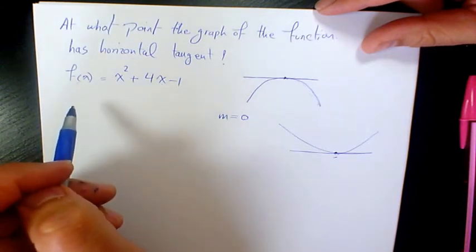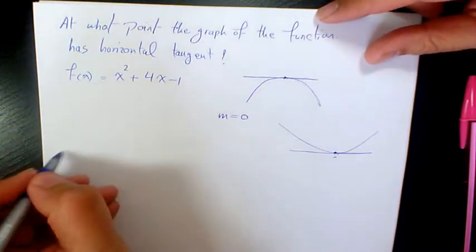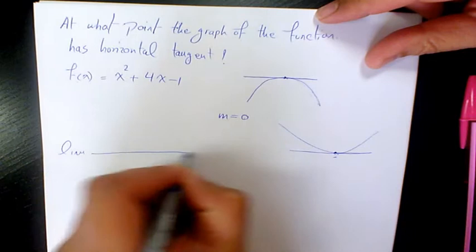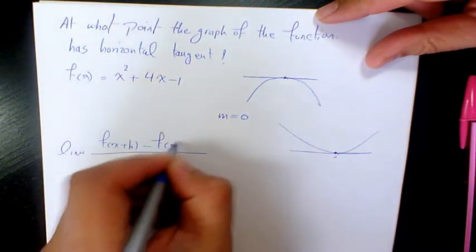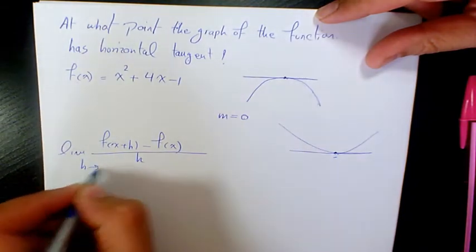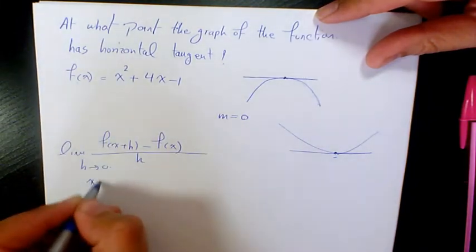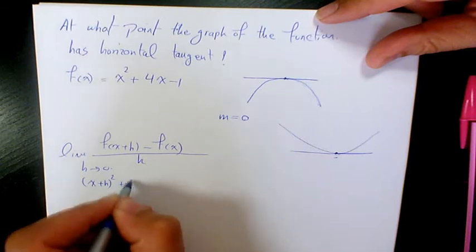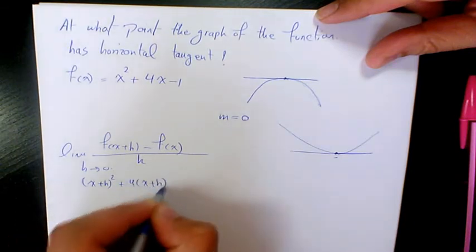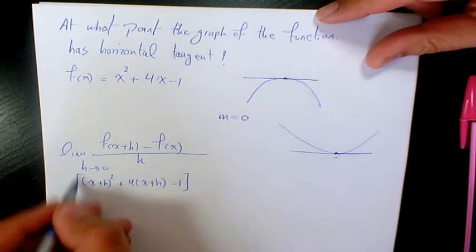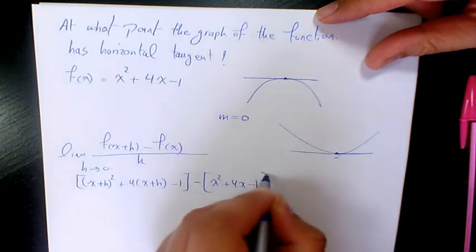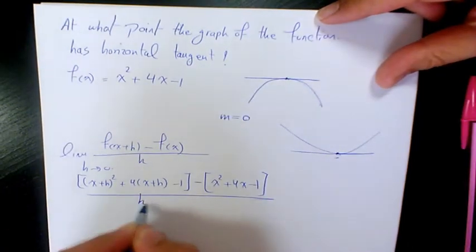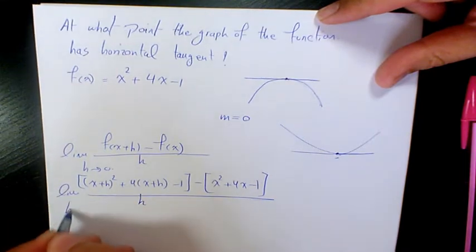I'm going to use the limit function: f(x+h) minus f(x) divided by h, when h approaches 0. It's going to be (x+h)² + 4(x+h) - 1, minus (x² + 4x - 1), all divided by h, when h approaches 0.